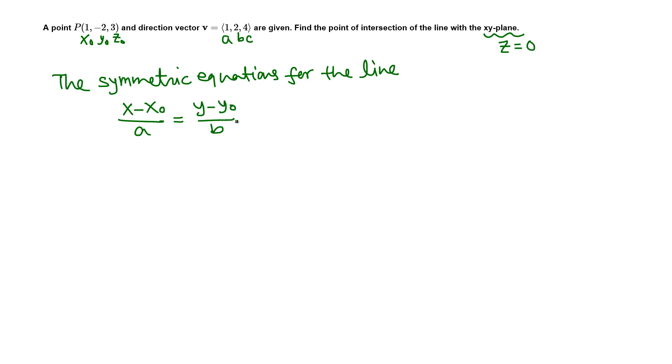That is in our case x minus 1 over 1 equals y minus negative 2, y plus 2, over B is 2, z minus z naught is 3 over 4. In our case x minus 1 over 1 equals y plus 2 over 2 equals z minus 3 over 4.